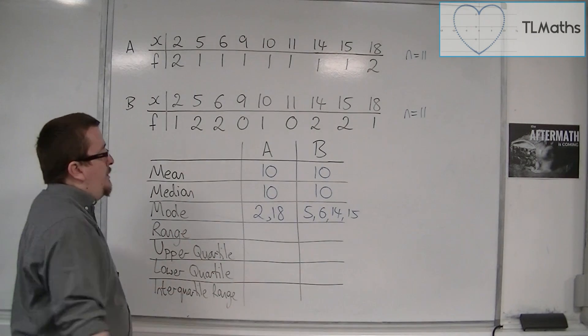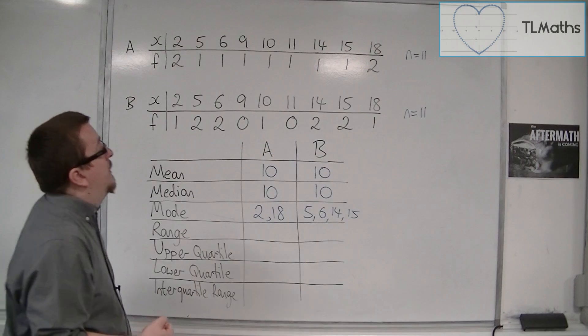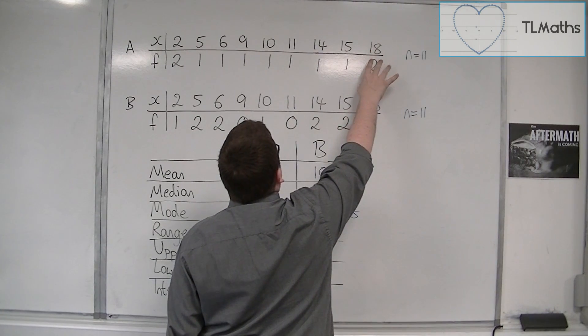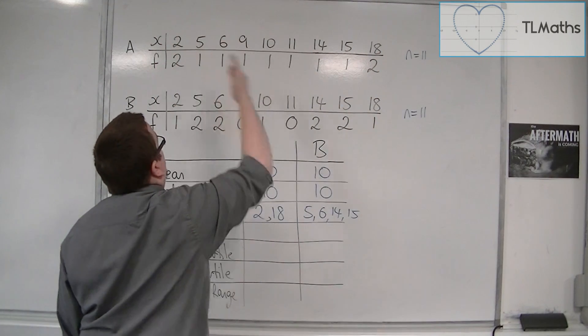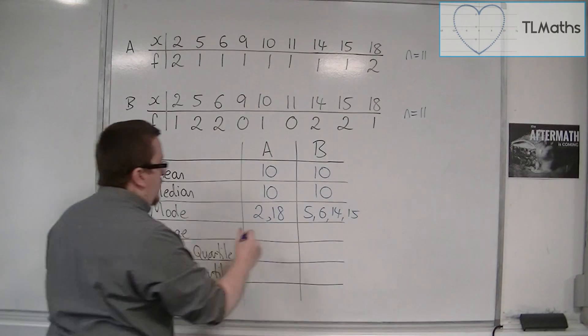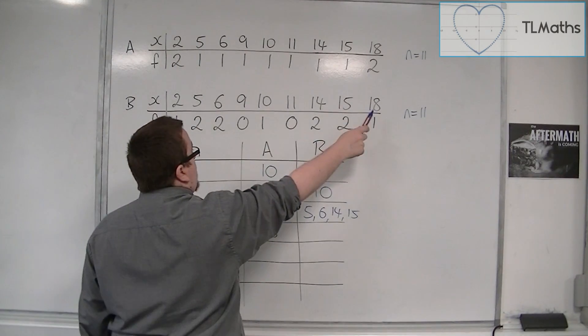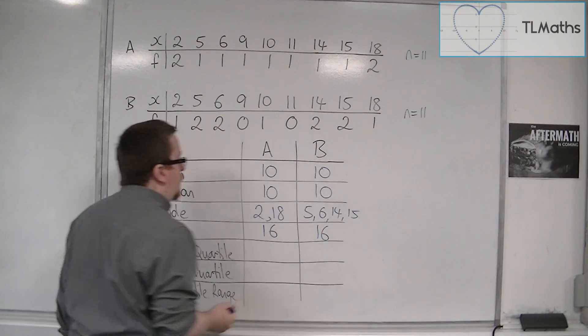How about the range? Now, the range is the largest take away the smallest. So we have 18 as the largest values, and the smallest values are 2. So 18 take away 2 gets me 16. So that's the range. And exactly the same for B. 18 is the largest value, take away 2 gets me 16.